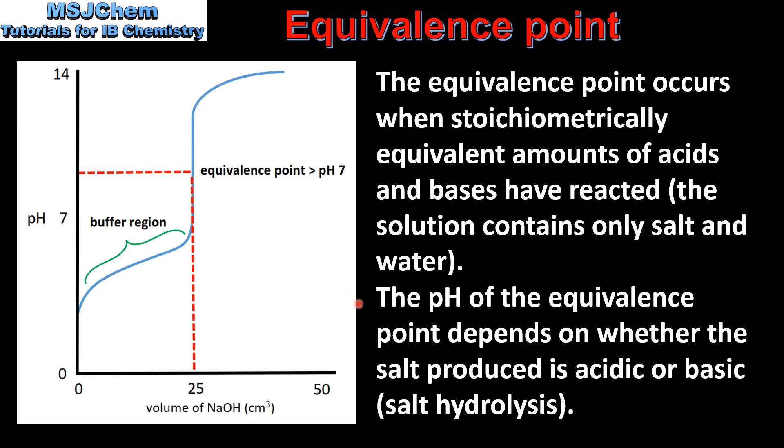The pH of the equivalence point depends on whether the salt produced is acidic or basic. Here we have a pH curve of a weak acid and a strong base. As you can see, the pH of the equivalence point is greater than 7.